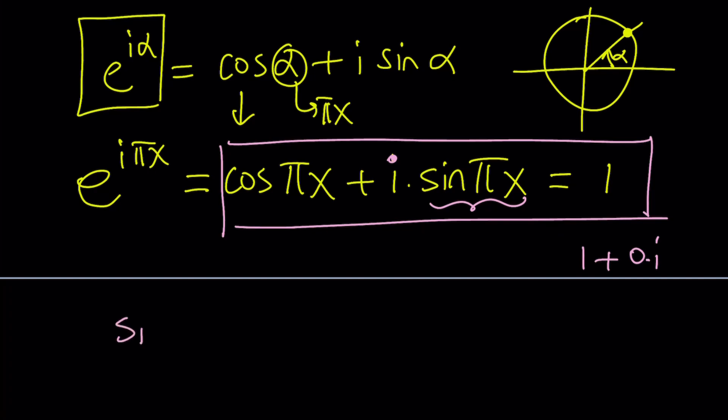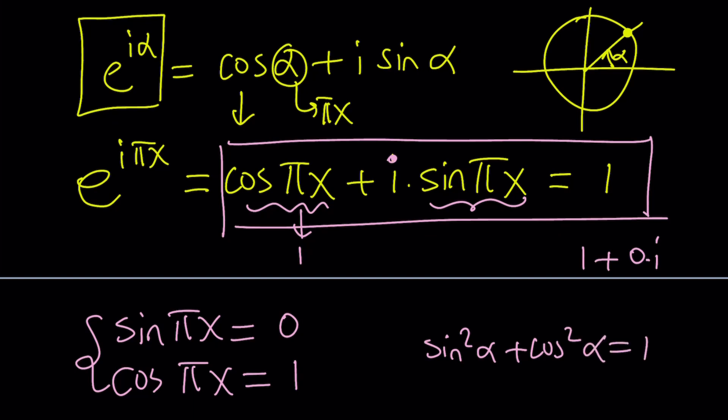So, what is that supposed to mean? It means sine of pi x equals 0. And at the same time, since the real part must be 1, we can safely say that cosine of pi x must be 1. So, we get a system from here. And this system is actually consistent, because sine squared alpha plus cosine squared alpha is equal to 1, right? That's a well-known identity. And if you replace alpha with pi x, nothing is going to change. It's still true. So, that's good.